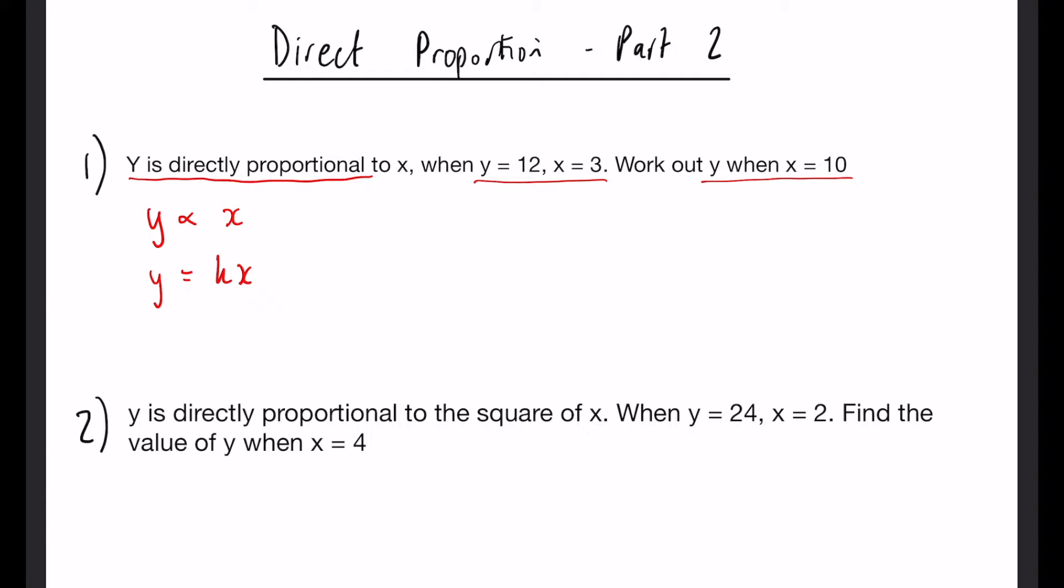Once we do that we want to work out what k is and to do that we use our comparison that we're given. So when y equals 12 and x equals 3 we can write this. Now we know that if 3k is equal to 12, k must be 4 by dividing by 3.